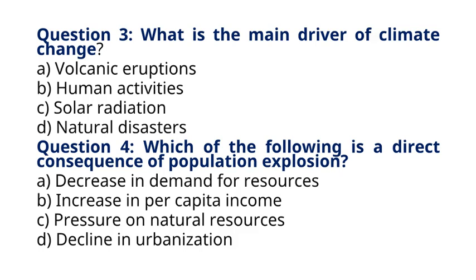Question 4: Which of the following is a direct consequence of population explosion? A. Decrease in demand for resources. B. Increase in per capita income. C. Pressure on natural resources. D. Decline in urbanization. The correct answer to question 4 is option C: Pressure on natural resources. Explanation: Population explosion leads to increased demand for resources, putting pressure on natural resources such as water, land, and energy.